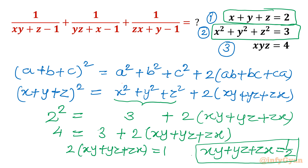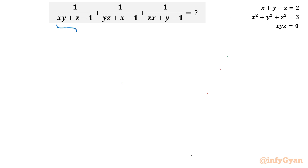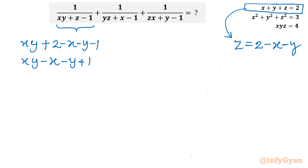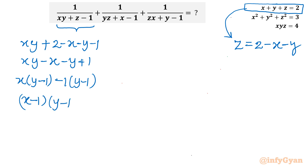Now let us consider the first denominator. Since z appears in it, we write z equals 2 minus x minus y from equation 1, and substitute: xy plus (2 minus x minus y) minus 1, which simplifies to xy minus x minus y plus 1. Taking x common from the first two terms gives x(y minus 1), and minus 1 common from the last two gives minus 1(y minus 1). So the denominator factors as (x minus 1)(y minus 1).